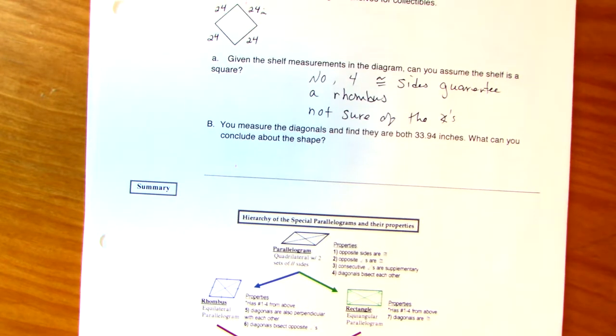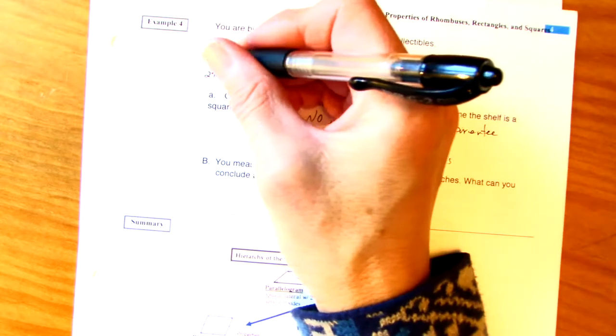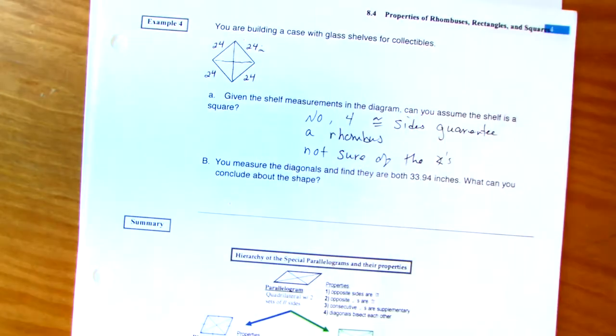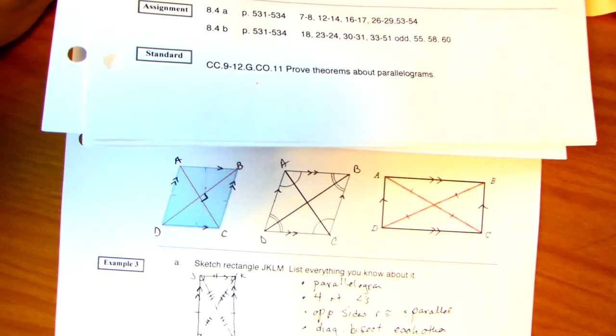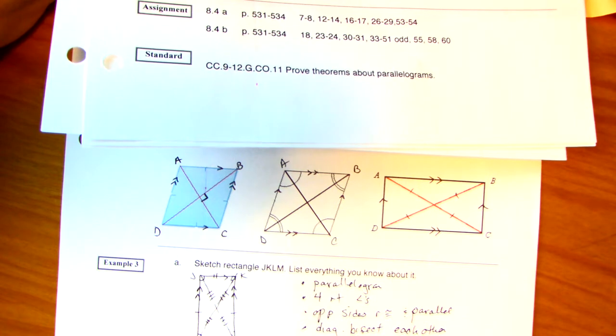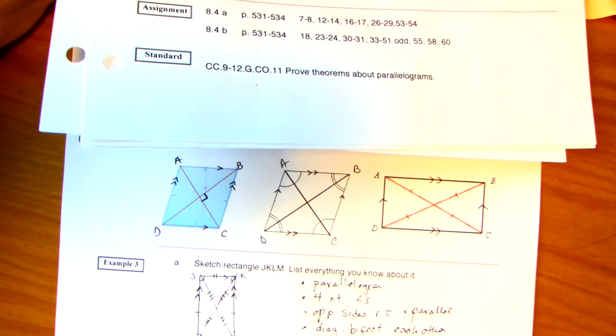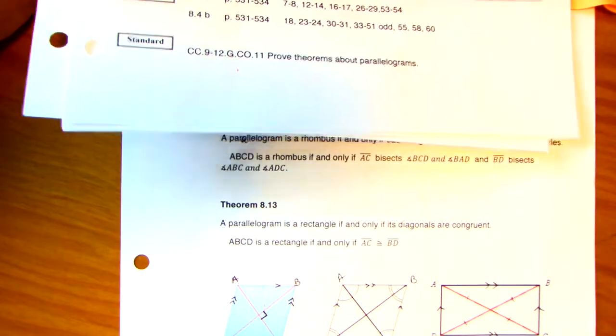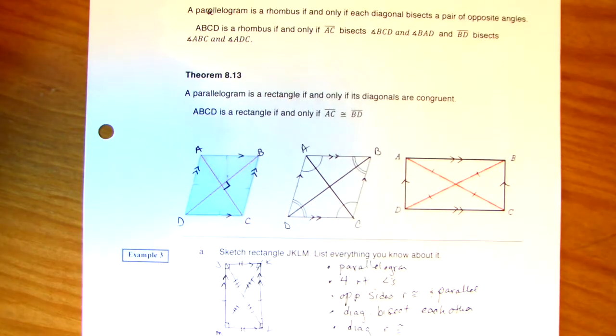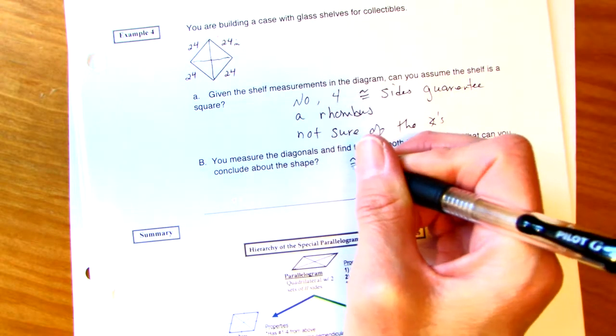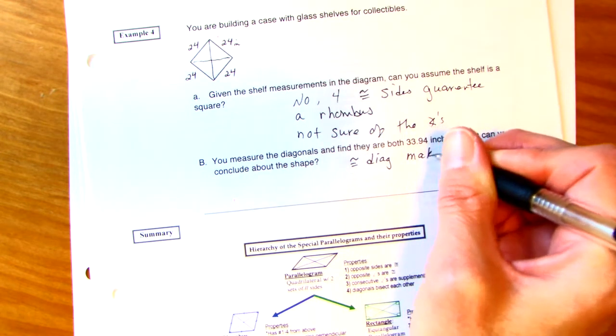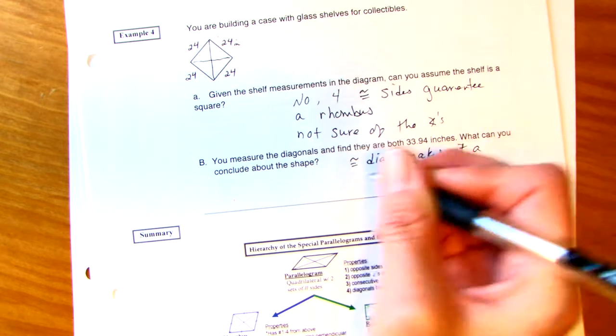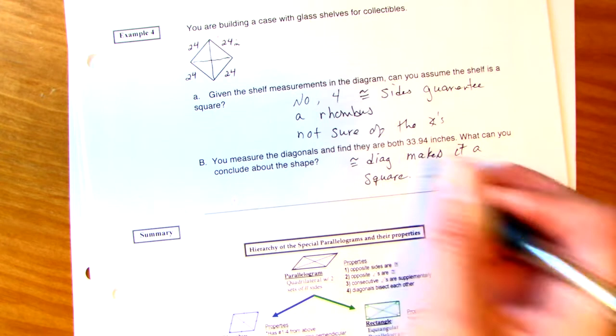So you measure the diagonals. Find that they're both 33.94. So we measure this. Now, what can you conclude about the shape? Remember what we just did about a square? This is the same, diagonals are congruent, but is that going to be the same with the rhombus? We don't know if they're not necessarily the same, but if you have right angles, the diagonals are going to be congruent. So, congruent diagonals makes it a square.